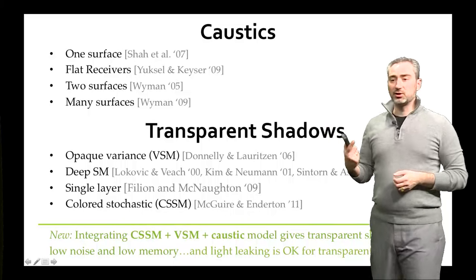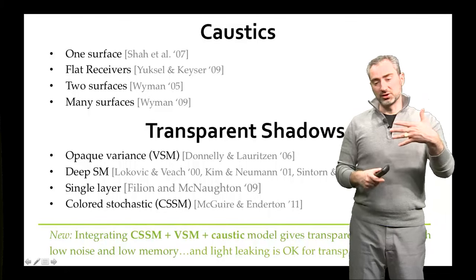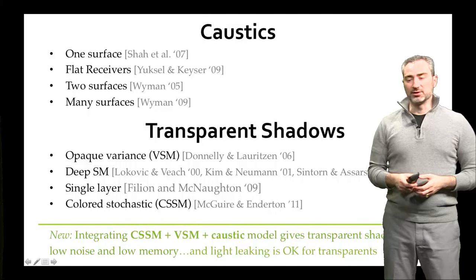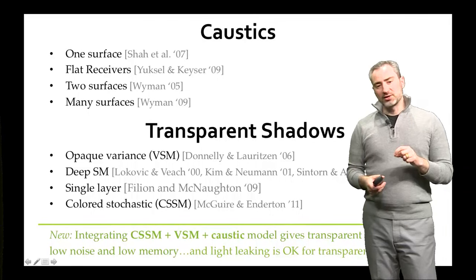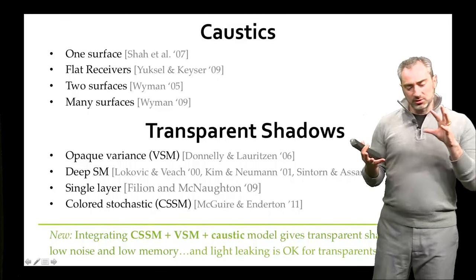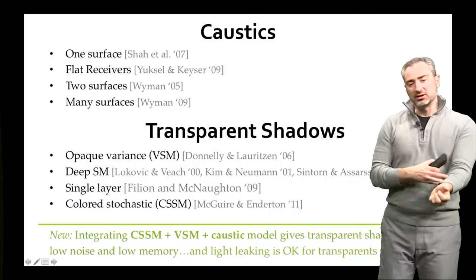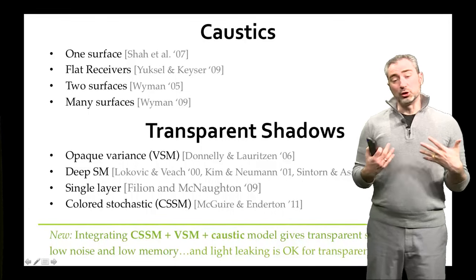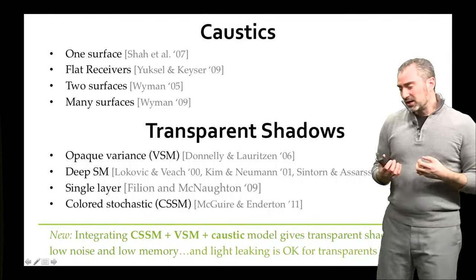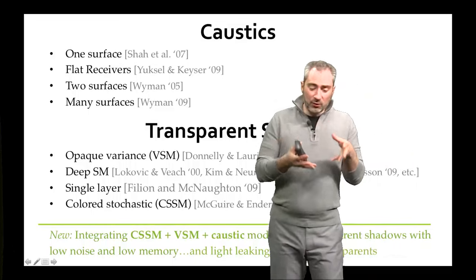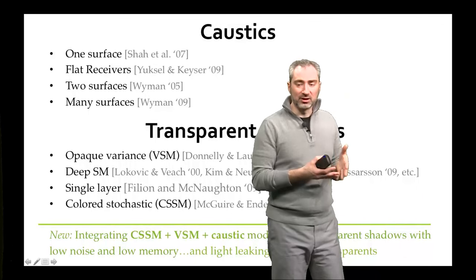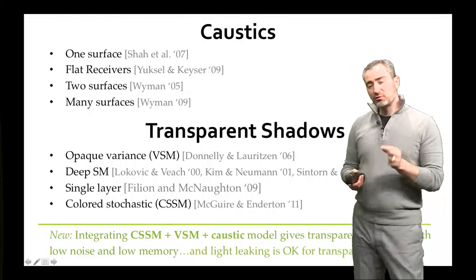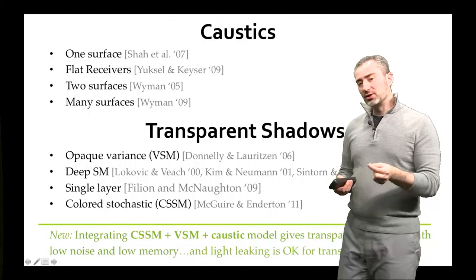There are also fast, high-quality caustic methods for specific conditions such as a flat receiver or one or two surfaces, and transparent shadow methods. We found complementary properties in two main research areas: stochastic shadow maps give high quality but are noisy and require an expensive filtering step, while variance shadow maps avoid the expensive filtering step but have light leaks. By combining the two methods, we can get both the performance and the quality. We still have a few light leaks, but they only occur inside transparent surfaces.